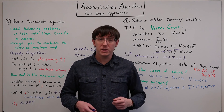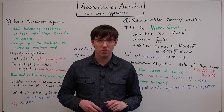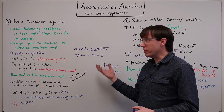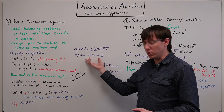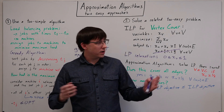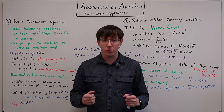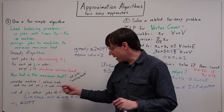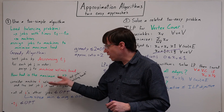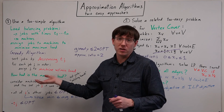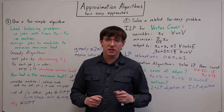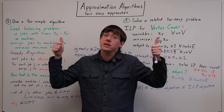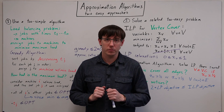The fact that we came up with an approximation ratio of 2 for both of these approximation algorithms is somewhat of a coincidence, because we know that a better approximation ratio for the greedy algorithm is possible. But it's also somewhat a consequence of the fact that we have chosen particularly easy examples of approximation algorithms.